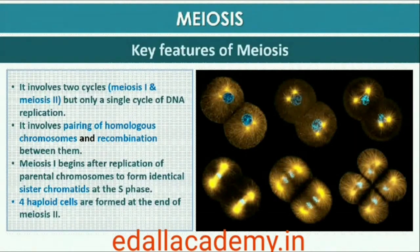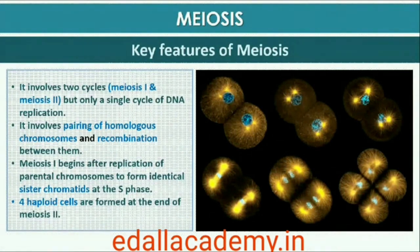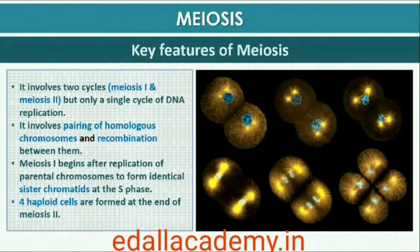The key features of meiosis are as follows: meiosis involves two sequential cycles of nuclear and cell division called meiosis I and meiosis II, but only a single cycle of DNA replication. Meiosis I is initiated after the parental chromosomes have replicated to produce identical sister chromatids at the S phase. Meiosis involves pairing of homologous chromosomes and recombination between them. Four haploid cells are formed at the end of meiosis II.